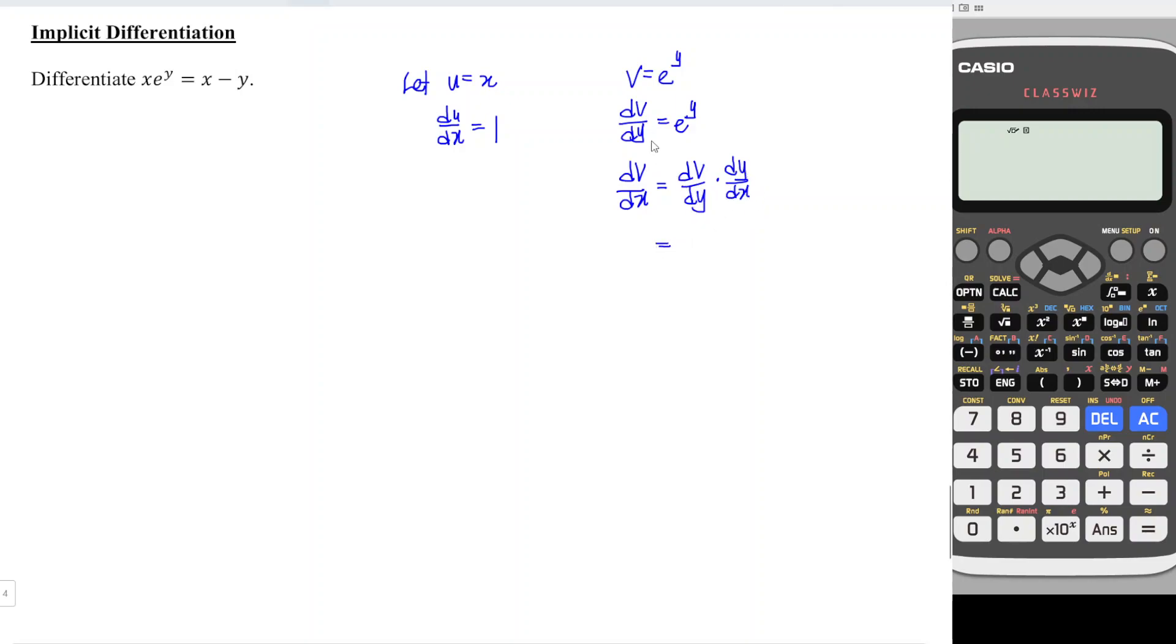So what is dv/dy? dv/dy is e to the power of y, then we times dy/dx, which means that dv/dx is equivalent to e to the power of y times dy/dx. So we already have the differentiation, the derivative of the left hand side.